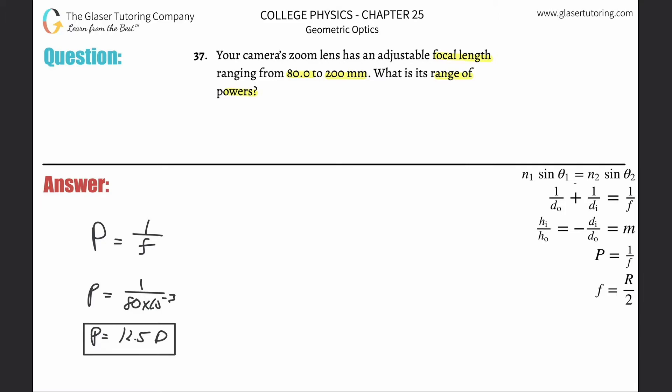We're going to do the same thing. That's going to be equal to 1 over f. That's then 1 over 200 times 10 to the minus 3. Let's see what we get: 1 divided by 200 times 10 to the minus 3.